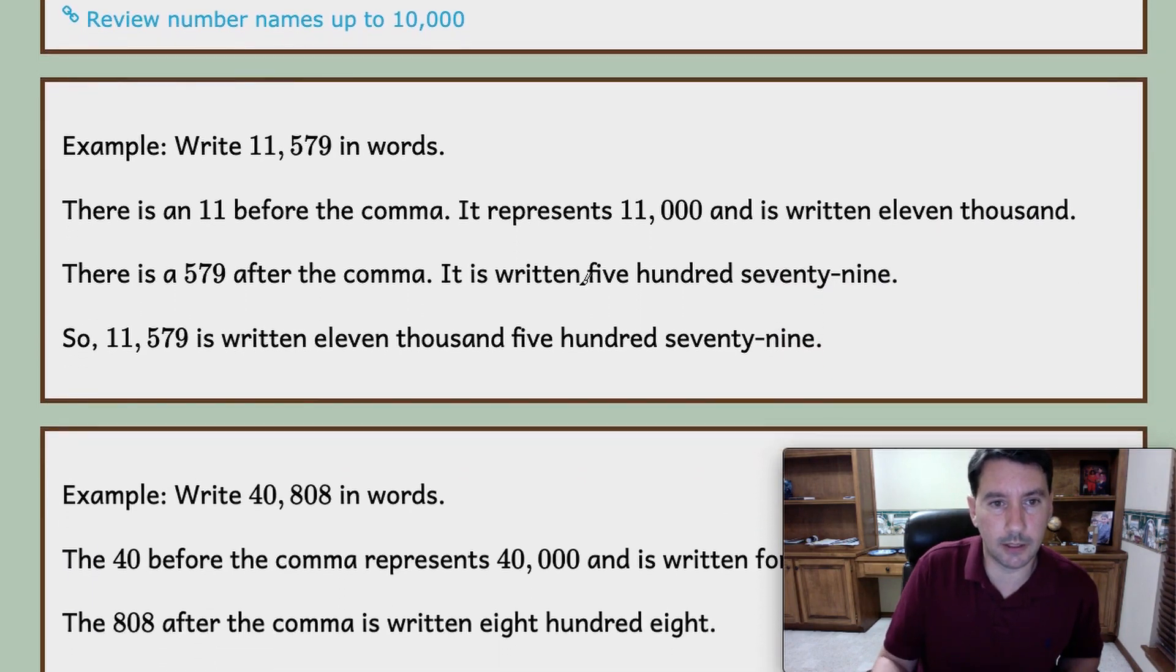Let's do an example. We're going to write 11,579 in words. This is the number we want to write. Here's the comma, and before the comma there's an 11, so we're going to write the word 11 and then we're going to write thousand.